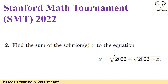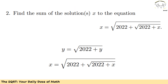Now let's focus on problem number 2. We need to find the sum of all solutions x to the given equation. Basically we find all solutions and add them together. There is a beautiful trick here: let's focus on the nested radical expression √(2022 + √(2022 + x)). I'm going to introduce a new variable y defined by y = √(2022 + y).